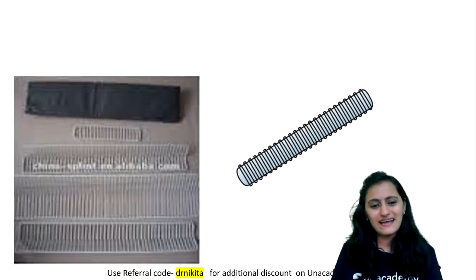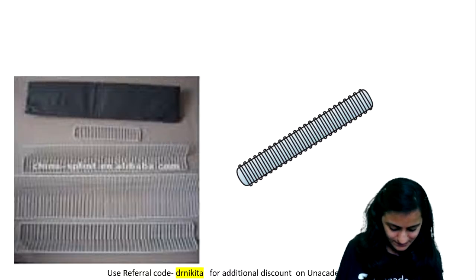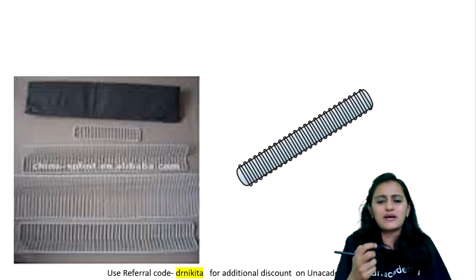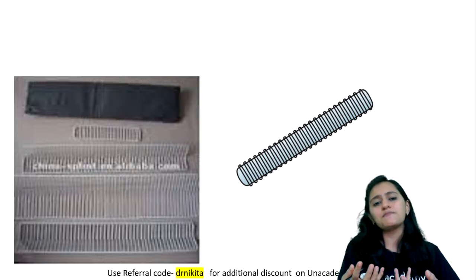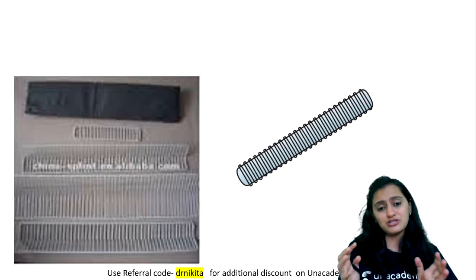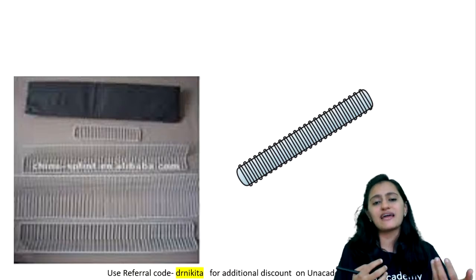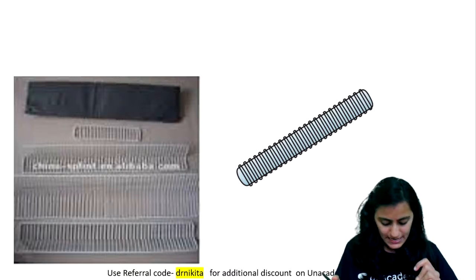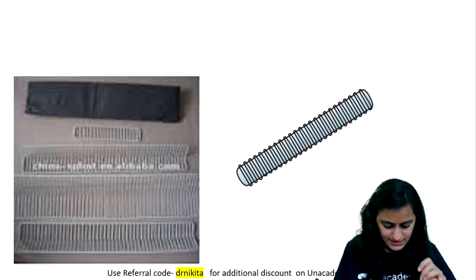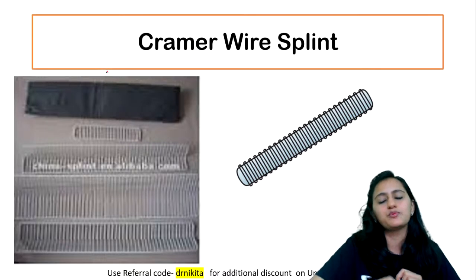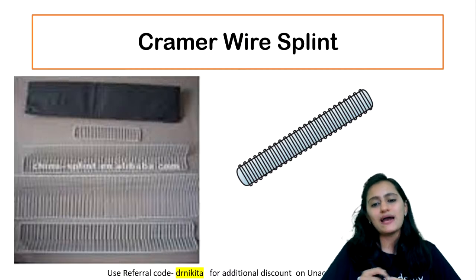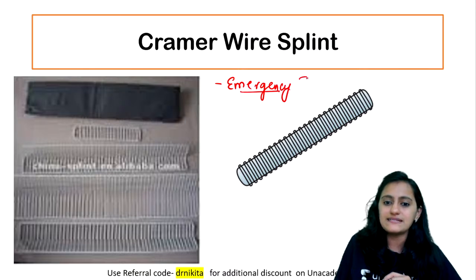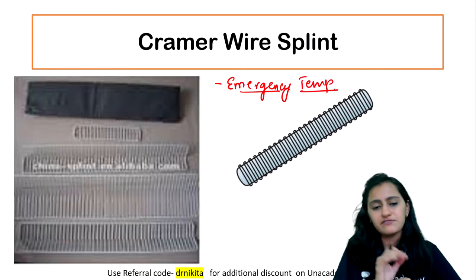So number one splint — can someone identify what the splint is? I give you a clue: this is a splint that is very malleable. You can use it anywhere in any part of the body. Basically you can use it for emergency conditions — suppose on the roadside you find someone in a road traffic accident and there is suspicion of a fracture. For emergency immobilization, temporary immobilization you can use this. This is your Cramer wire splint, used for emergency immobilization on a temporary basis till you take the patient to the hospital for definitive treatment.